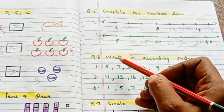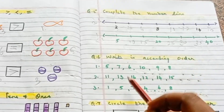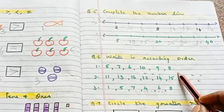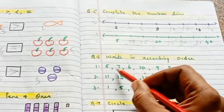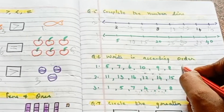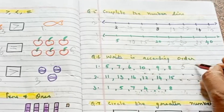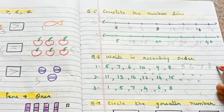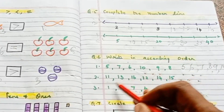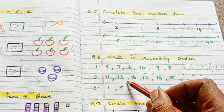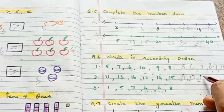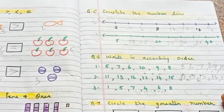Next question, question number 6: Write in ascending order — numbers go in order from smaller to bigger. Kids, arrange and write. Smallest number first: 5, 6, 7, 8, 9, 10. Next: smallest is 11, then 12, 13, 14, 15, 16.